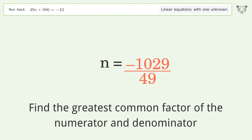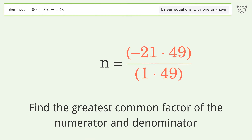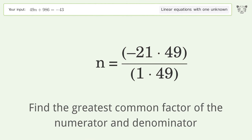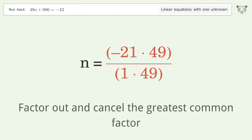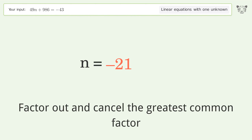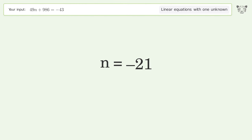Find the greatest common factor of the numerator and denominator, then factor out and cancel it. The final result is n equals negative 21.